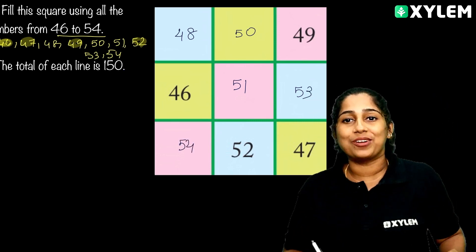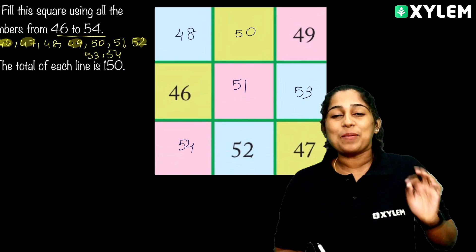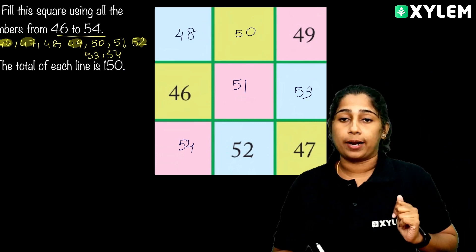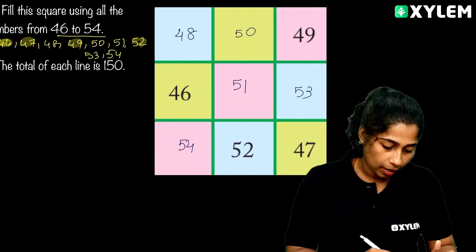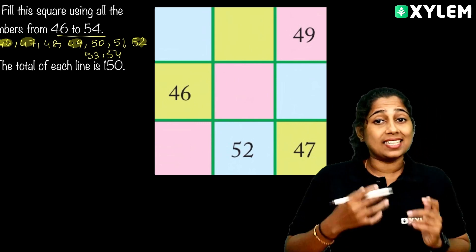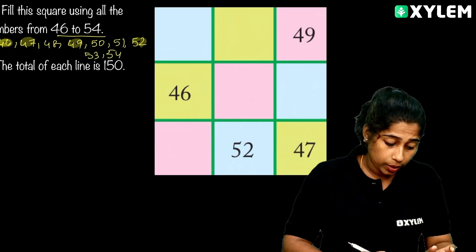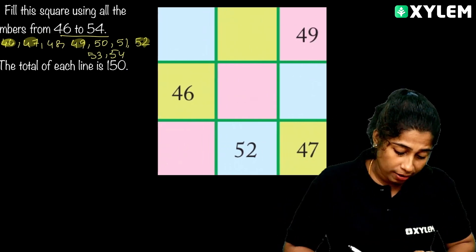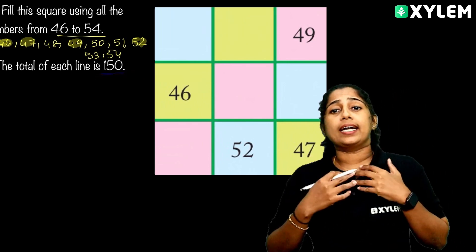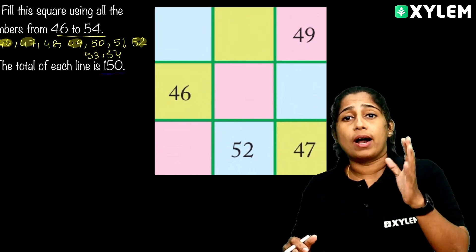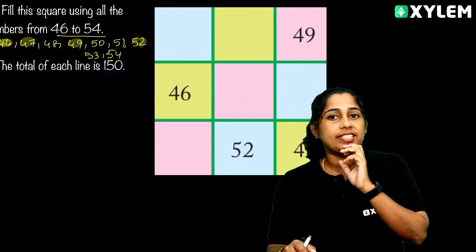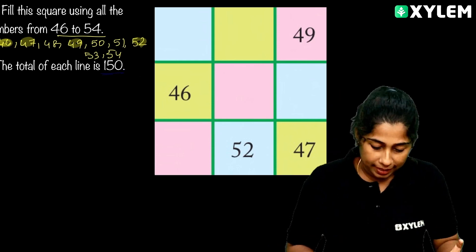How do we fill the numbers here? We know that every magic square has a magic number. The total of each line is 150 — that is the magic number. Is it correct? How do we do this? Let's work it out.